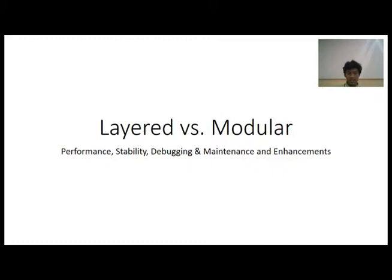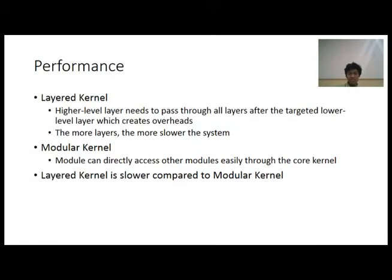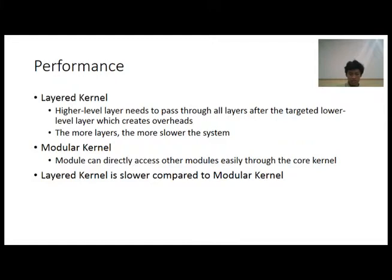Hello again. I'm going to talk about the comparison between layered kernel and modular kernel. In terms of performance, layered kernel is lower compared to modular kernel. This is because higher level layers in the layered kernel require a lot of overhead and passing if they want to use a lower level layer. The more layers, the slower the system. Meanwhile, in modular kernel, modules can directly access other modules easily through the core kernel — you still need to pass through it, but only once or twice.